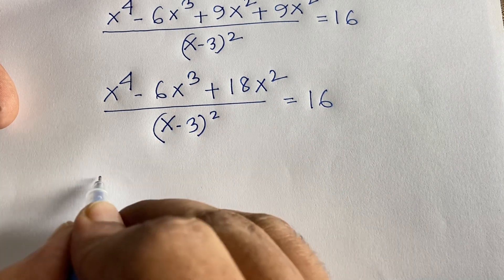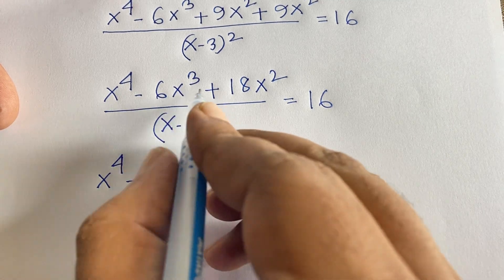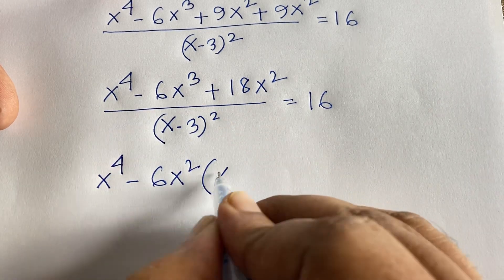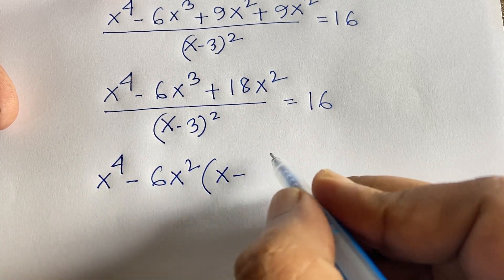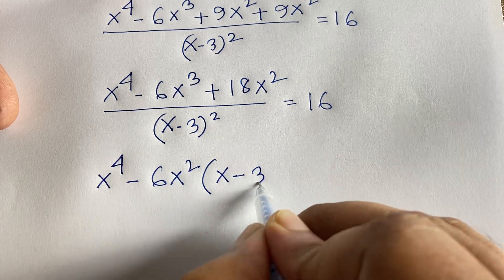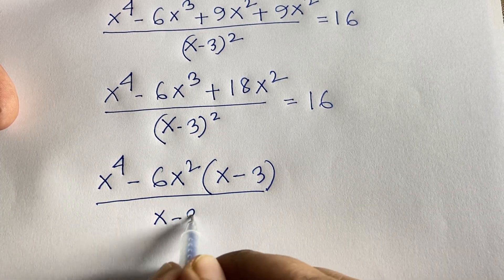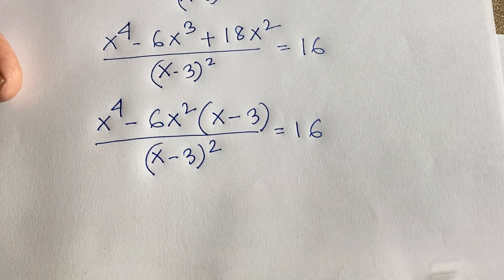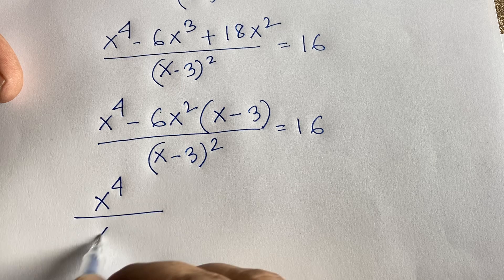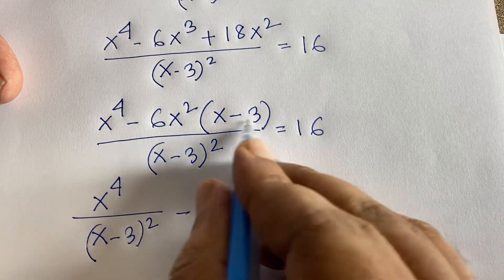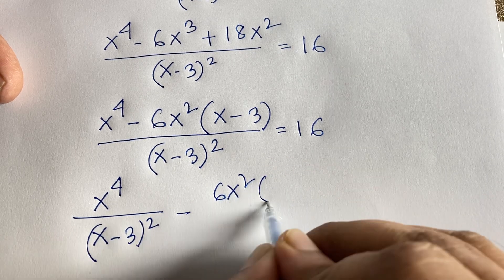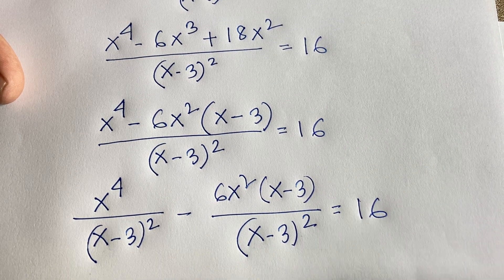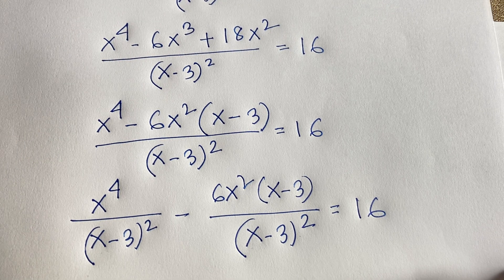Now I factor out 6x² from the expression. From x⁴ - 6x³ + 18x², factoring 6x² gives 6x²(x - 3). We split this as x⁴/(x-3)² minus 6x²(x-3)/(x-3)² = 16.